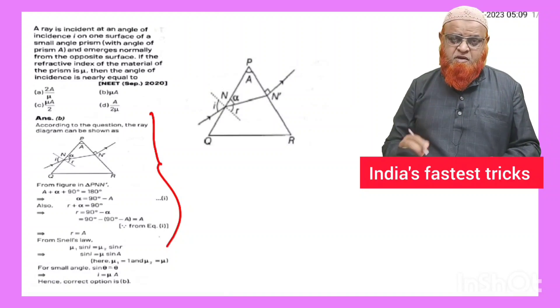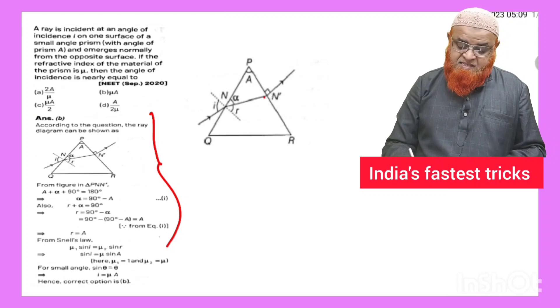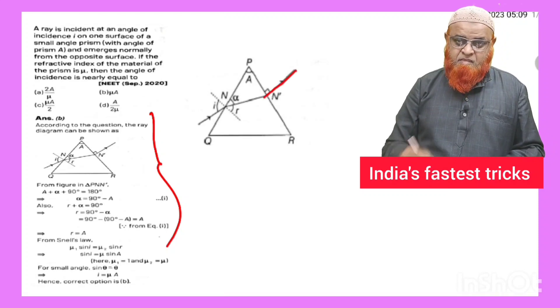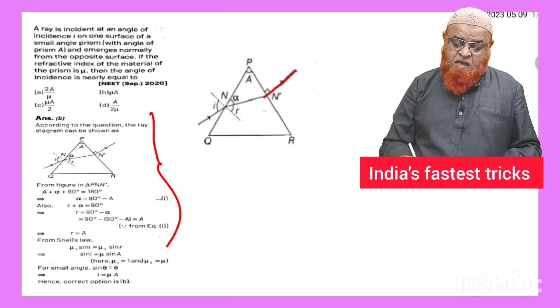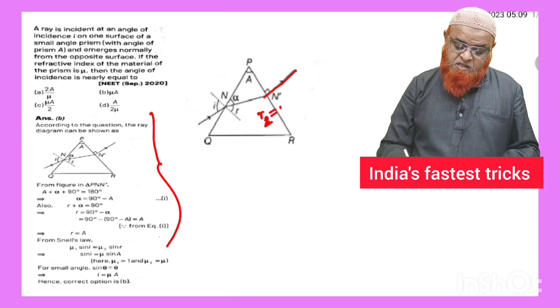Now you can see here as the light ray is entering in this direction, normally normal to the surface PR. We can take here r1, r2 - sorry, this is r2 is equal to i2 is equal to 0.